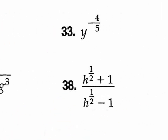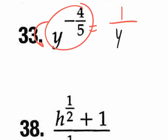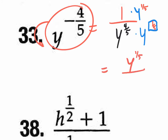For problem 33, a negative exponent means move it to the other side. Rewrite as 1 over y to the positive 4/5. To rationalize, multiply both top and bottom by y to the 1/5 — because 4/5 plus 1/5 equals 5/5 equals 1, giving a whole y on the bottom. The answer in exponential form is y to the 1/5 over y. In radical form: the fifth root of y over y.